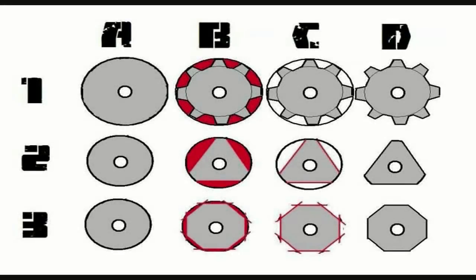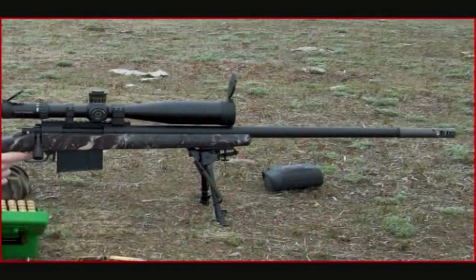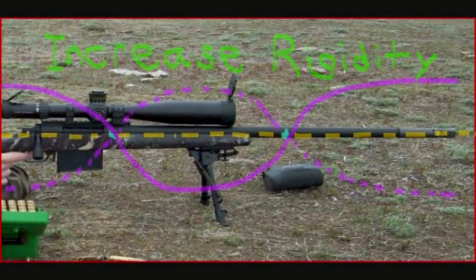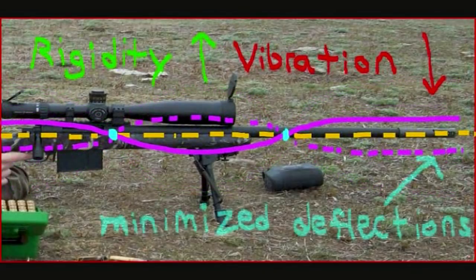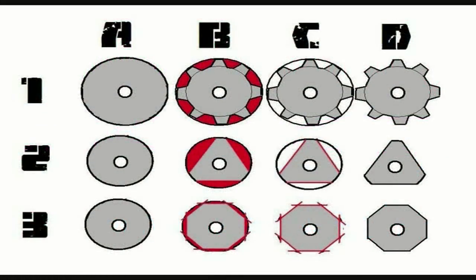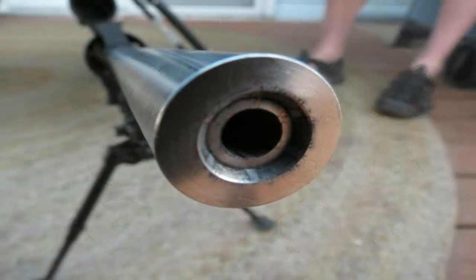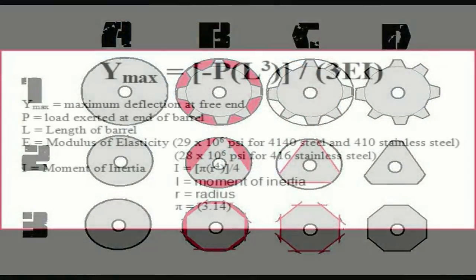Let's start by taking a look at some of the different barrel profiles. These are cross-section illustrations I made in Paint of some of the different common barrel profiles you might see. As we talked about before on the barrel harmonics video, increasing rigidity of the rifle system — not just the barrel, but the entire system — does reduce the amplitude of the anti-node regions of the vibrations. So if you increase rigidity, it'll have less deflection as the rifle vibrates, which increases the inherent precision capabilities. Generally speaking, the shorter and fatter a barrel is, the more rigid it is. Here's the engineering math behind that.